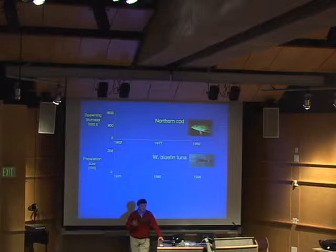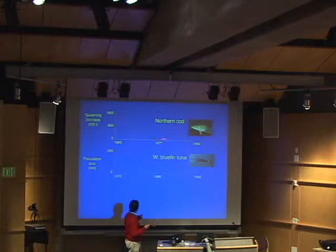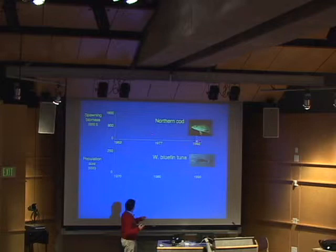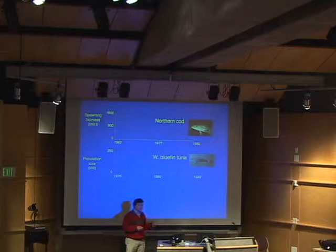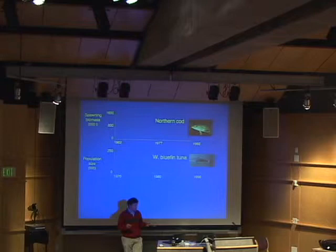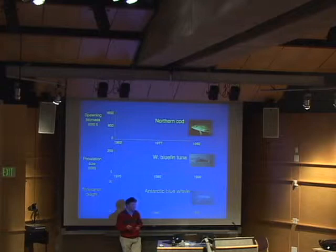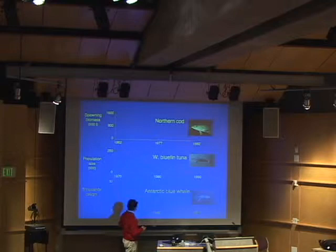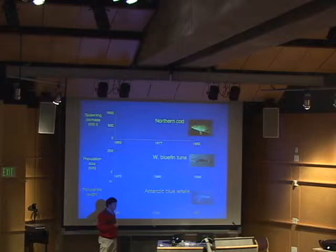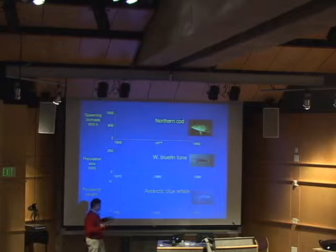And where this really comes crashing into traditional fisheries type management is when you start looking at some of these declines. Here's the northern cod — a complex of stocks off Newfoundland. They had about a 99% decline over a roughly 30-year period. A very similar-looking shape for the decline of stocks of western bluefin tuna. And when you look at these and compare them with something like Antarctic populations of blue whales — it's awfully similar. In all cases, we've got about a 95 to 99% decline over 20 or 30 years, and these rates of change look pretty similar.